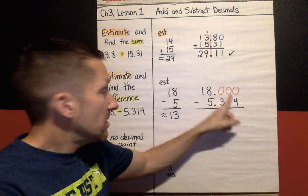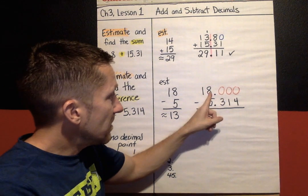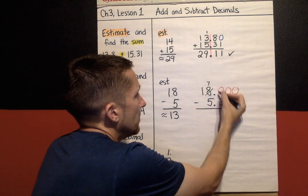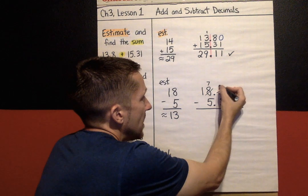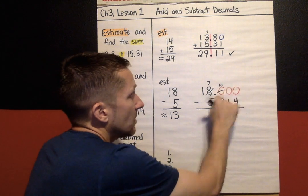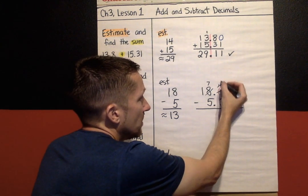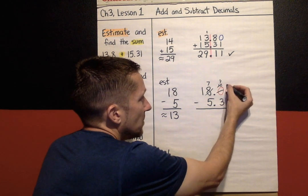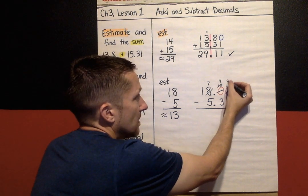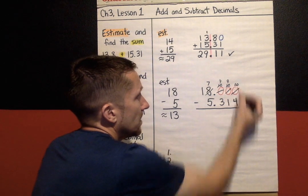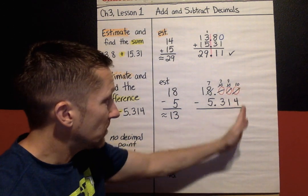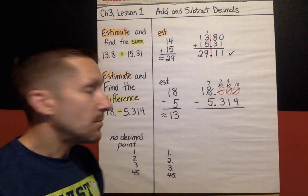0, take away 4. Can't do that. So, I need to borrow. Can't borrow from here. Need to borrow from here. Still nothing. I need to go all the way over to this 8 to borrow. I'm going to cross out the 8, make that a 7. Then this becomes a 10, but just briefly. It becomes a 10, but now I need to borrow from the 10 to come all the way back over this way. So, it's a 10 for a moment, but then it becomes a 9. Then this 0 becomes a 10, but only for a moment, because I'm borrowing from the 10, it becomes a 9. Then this 0 turns into a 10. But it stays a 10. I don't have to keep borrowing anymore. I've hit the end, that's where I stop. That's my setup right there.